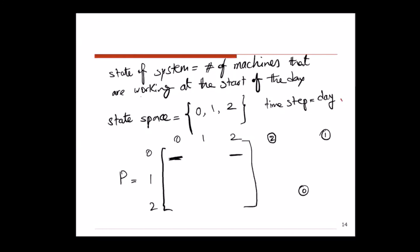Both machines went down the day before — can they be up and running today? No, it takes two days. So the probability of going from state zero to zero is zero; it doesn't happen. In one day I cannot go from zero machines to zero machines. Similarly, going from zero to one is also zero, because if both machines failed the day before, tomorrow both of them will be up and running, so having only one up would never happen.